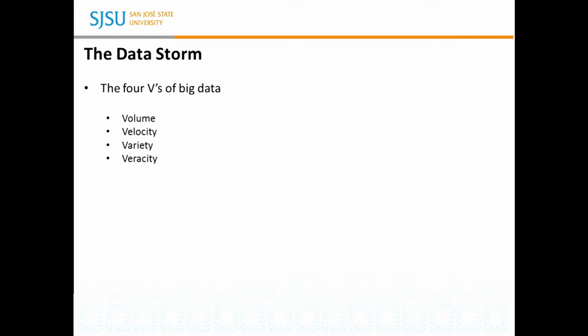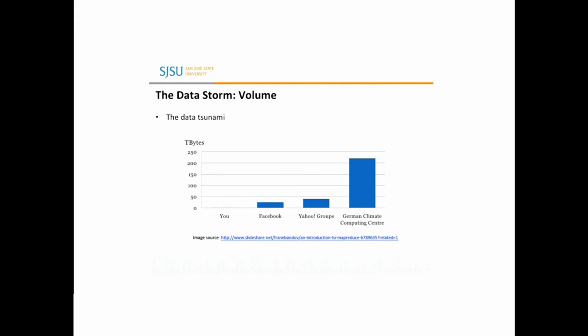The first V is volume, which simply refers to the increasing size of data. Social media, for example, has been known to produce a lot of researchable and actionable data every day. But some scientific data, such as climate change and forecast research data, can feed up to 200 terabytes — that's 10 to the 12th — of data per day. So it's not only about our daily data usage or social media data, but also a lot of research and archival data that increases dramatically every day.